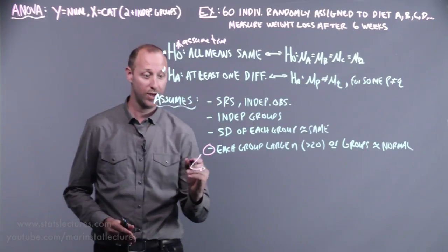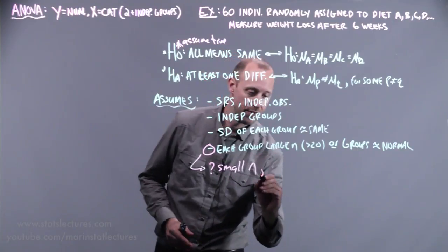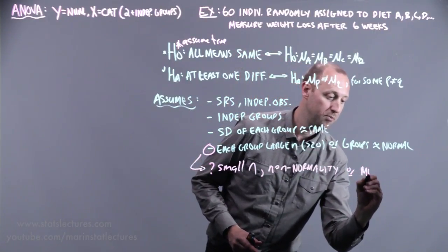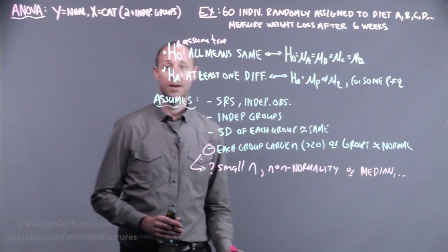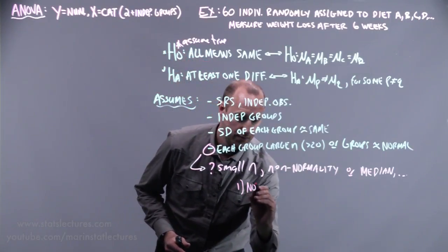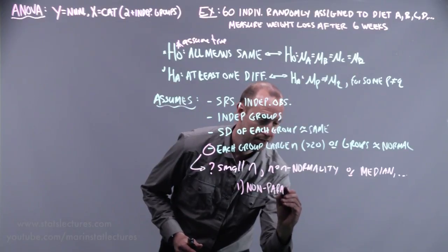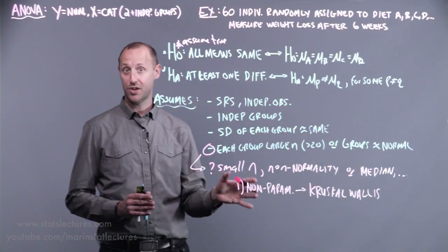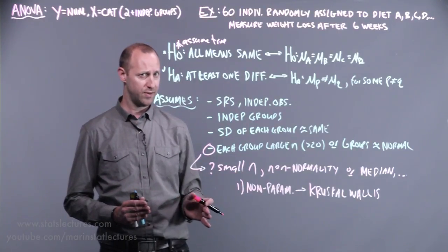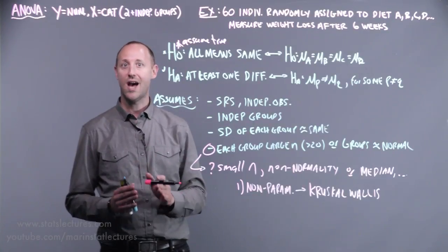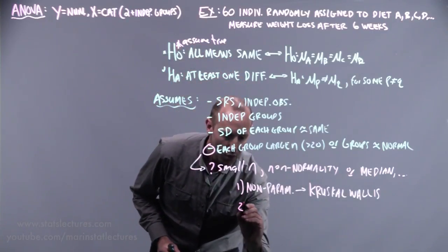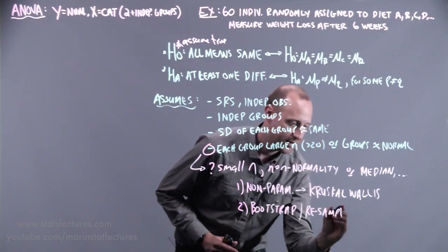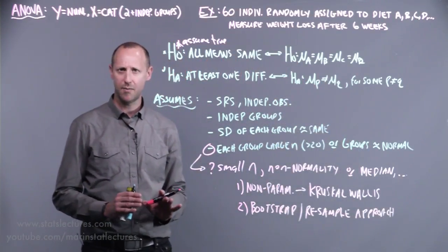What if these assumptions aren't met? What if we have a small sample size, we have non-normality, or what if we want to test about median rather than means? Then we can use either non-parametric approaches. We can use the Kruskal-Wallis one-way analysis of variance—this is the non-parametric alternative. It works pretty similar to the non-parametric tests we've seen so far. Rather than using actual values, it ranks them and then compares the ranks. Or we could also consider using some form of bootstrap or a resample type approach.